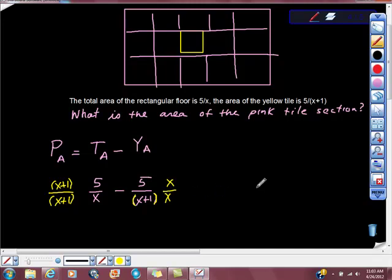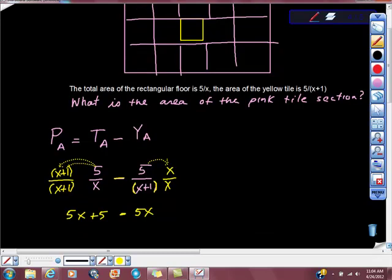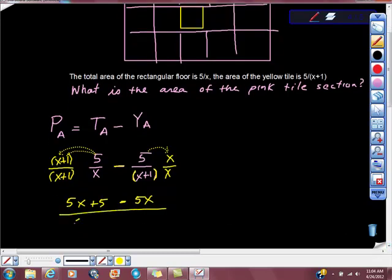So we're going to go ahead and do this little bit of math here, and we get 5x+5. All I'm doing right now is distributing this into here. Then I'm going to multiply this times this. This negative sign is this one, so 5 times x is -5x. All over (x+1) times x.